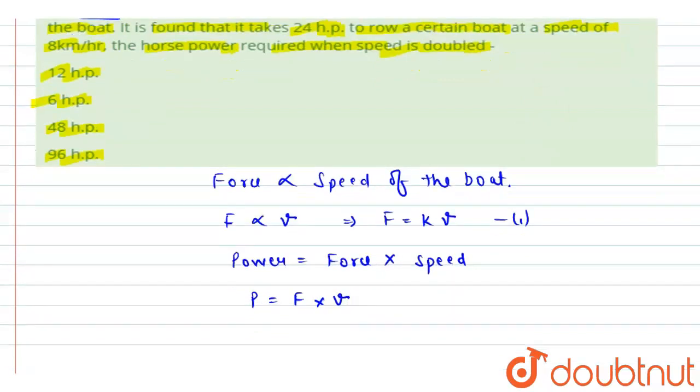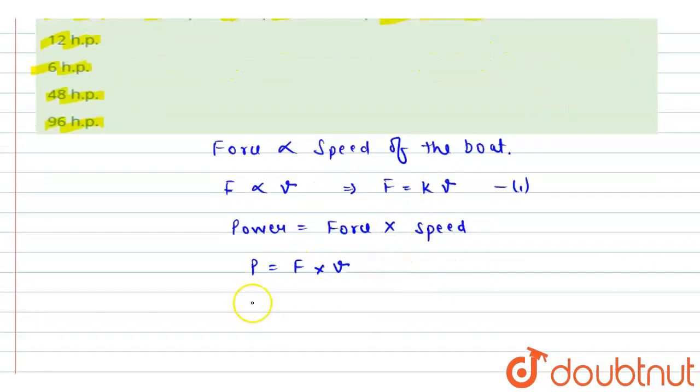Now we can replace the force by the expression in equation one. So we have k times v into v, which gives kv square. As k was a proportionality constant, we can write power is proportional to velocity whole square.